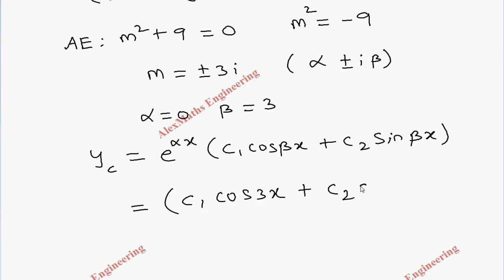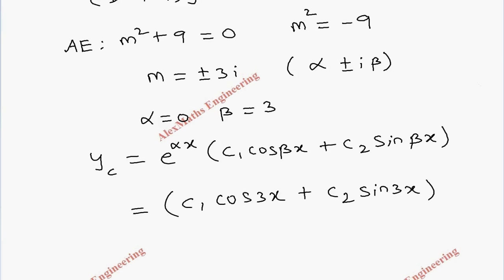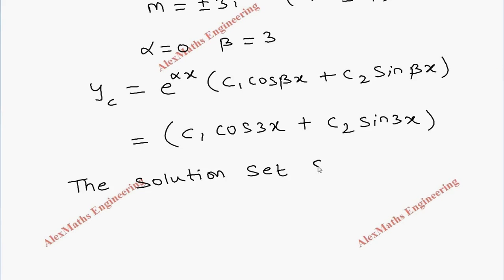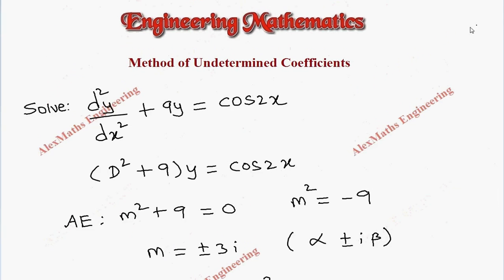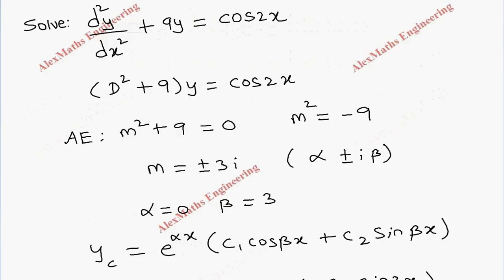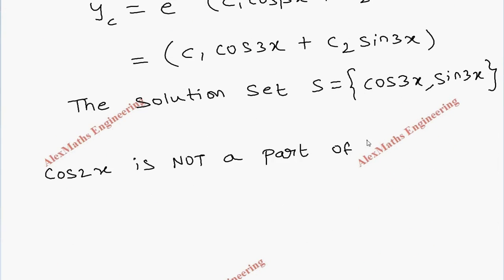Now the solution set is consisting of cos 3x and sin 3x, but on the right hand side of the equation we have cos 2x. So cos 2x is not a part of the solution set.